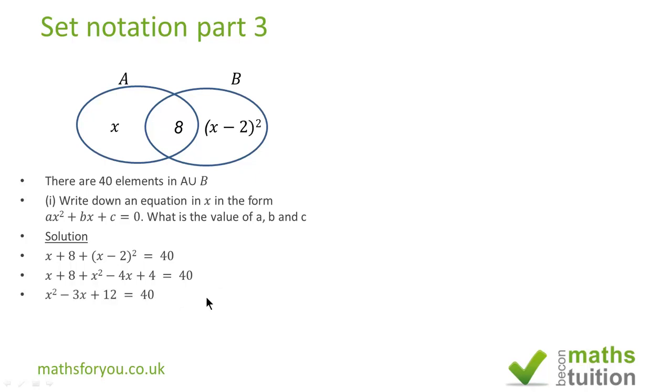And when you collect like terms you have x² - 3x + 12 = 40. Take 40 across we end up with x² - 3x - 28 = 0. So a is 1, b is minus 3, and c is minus 28.